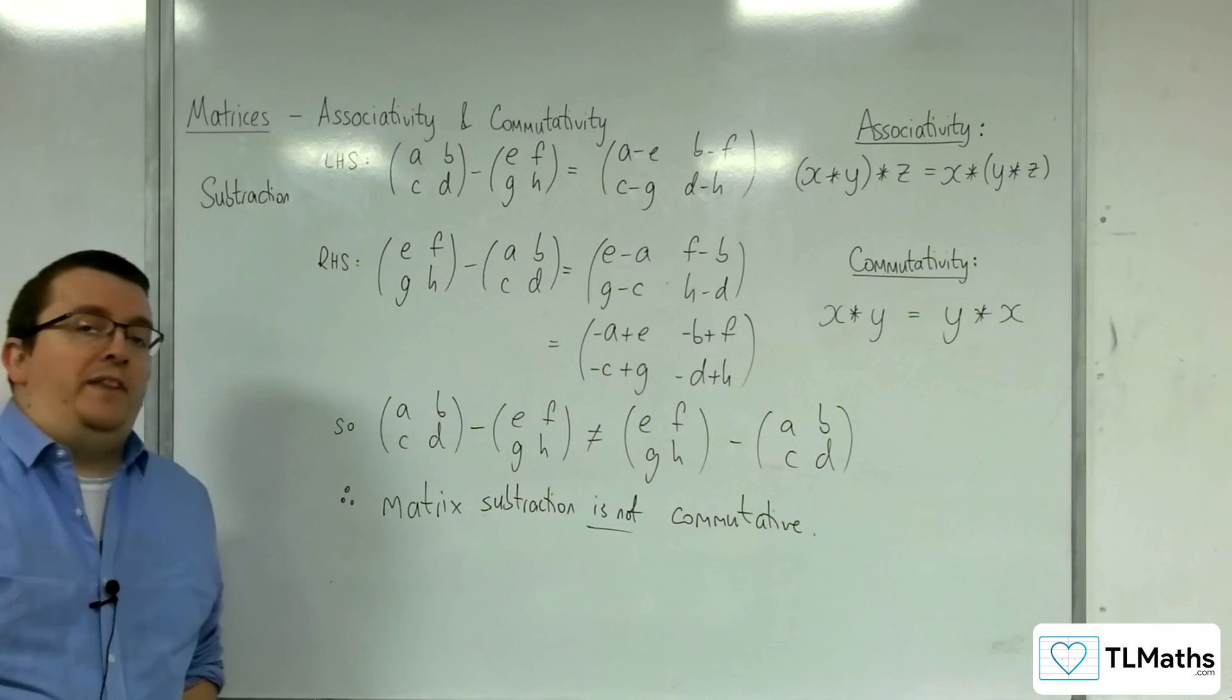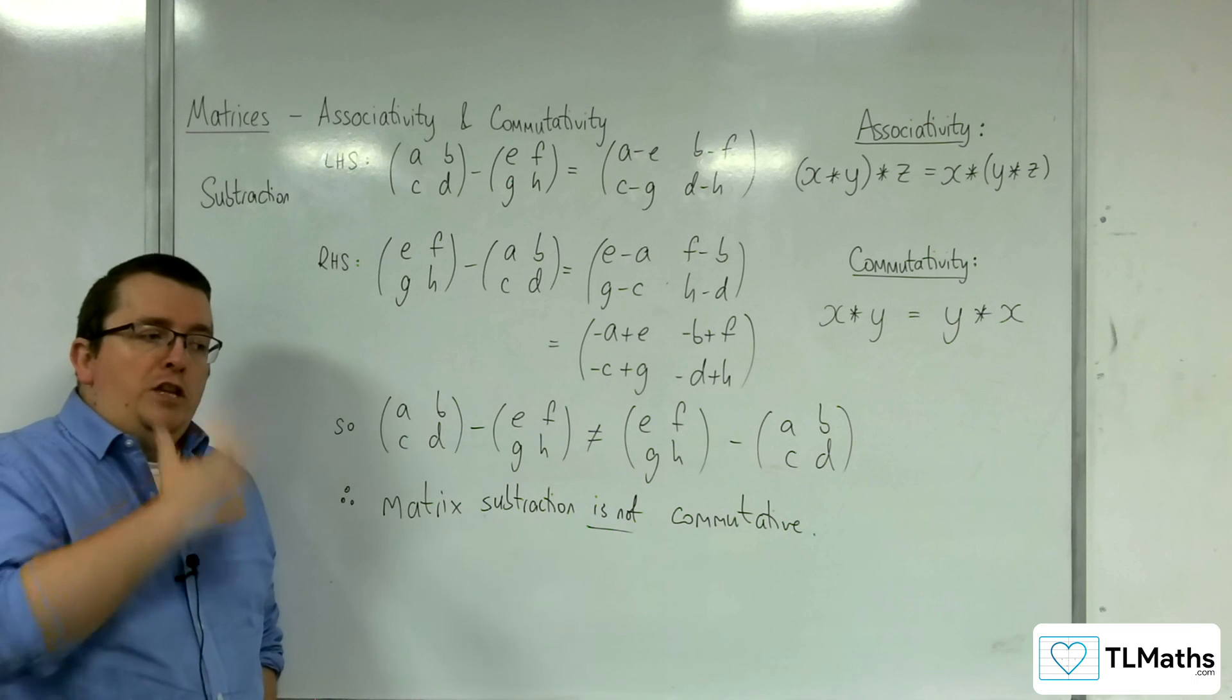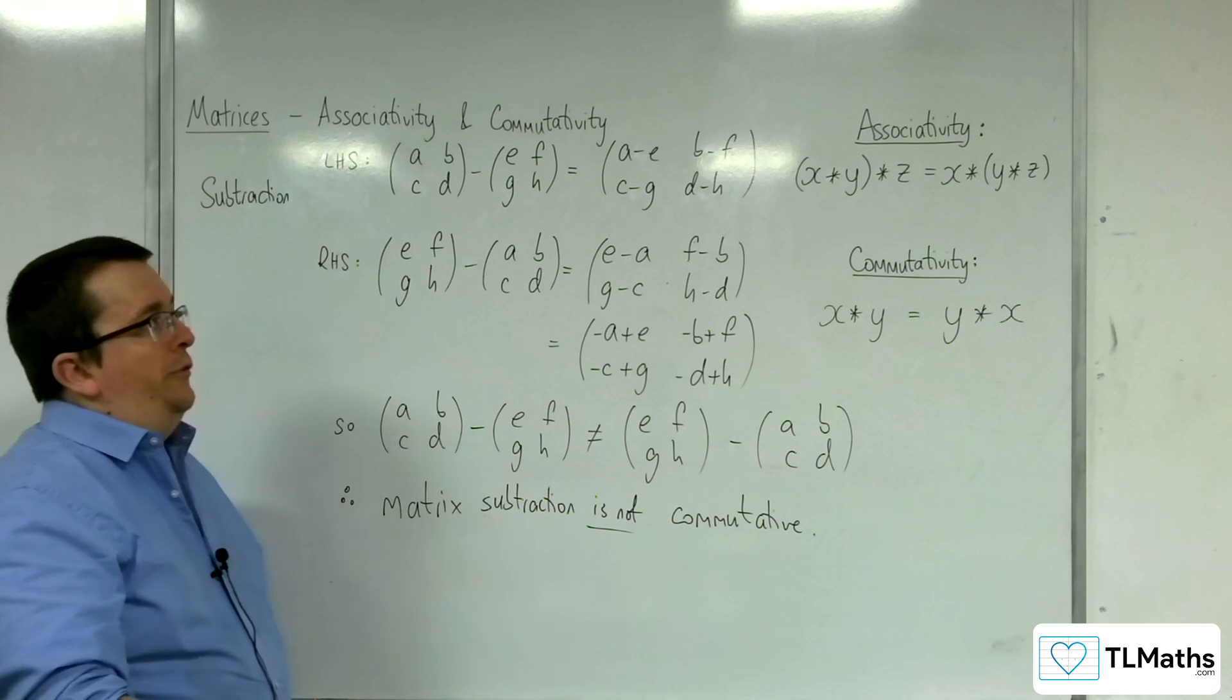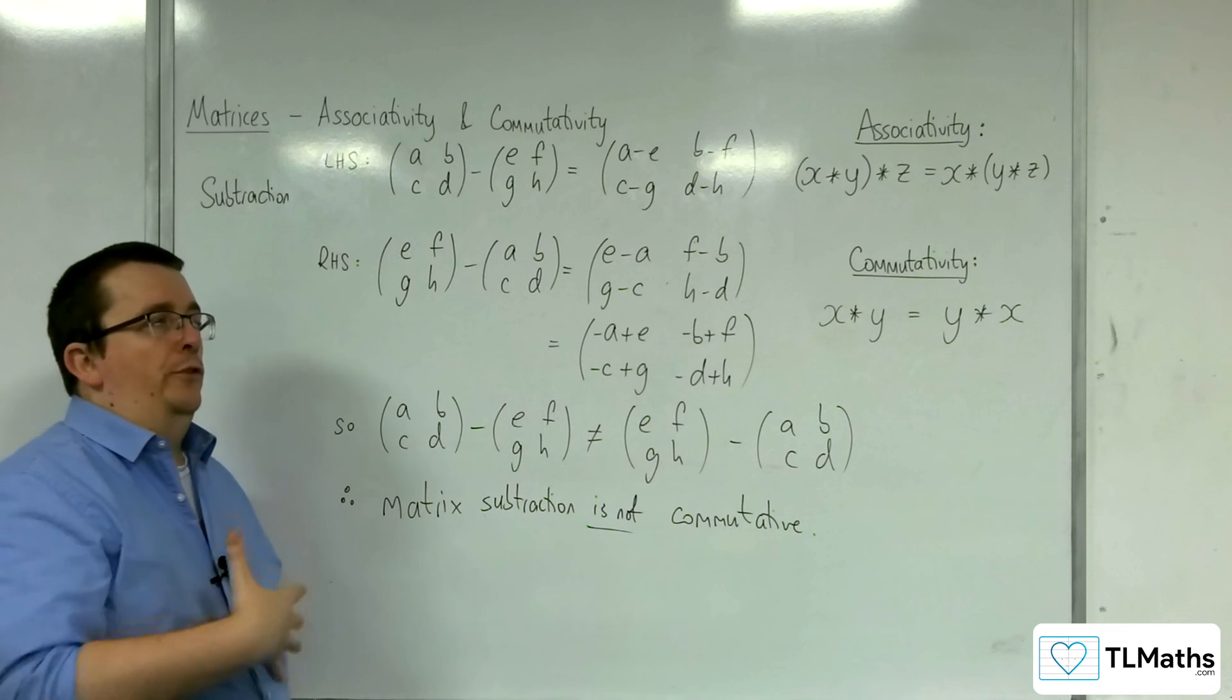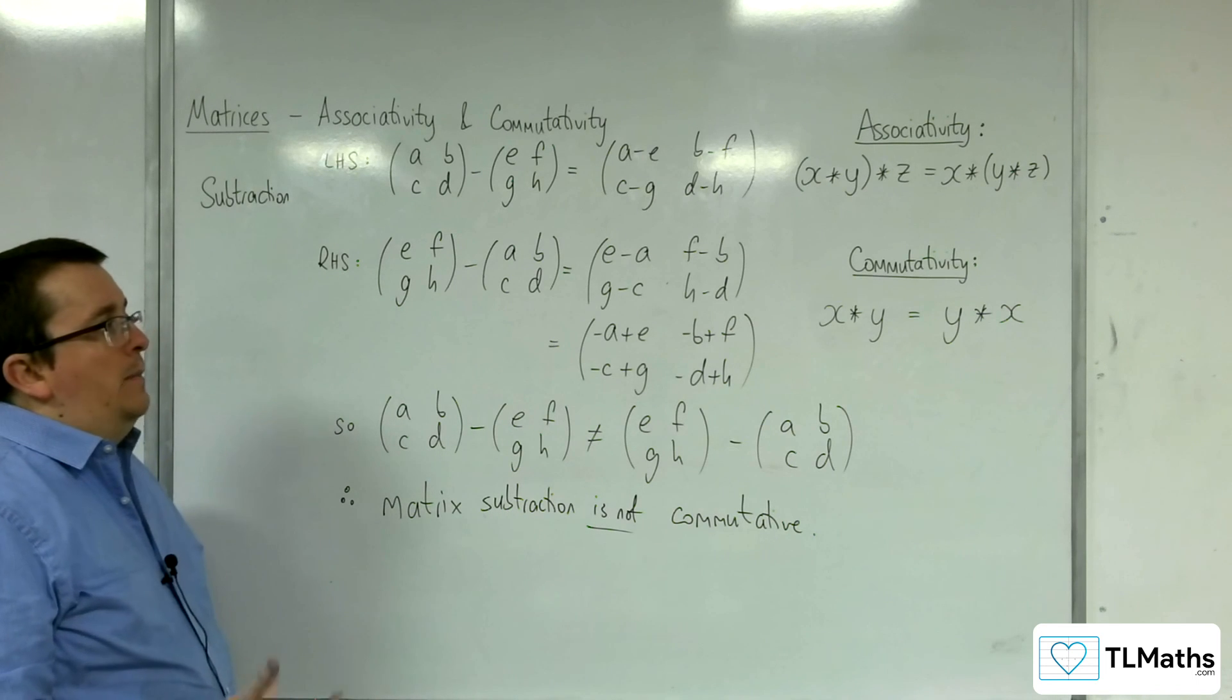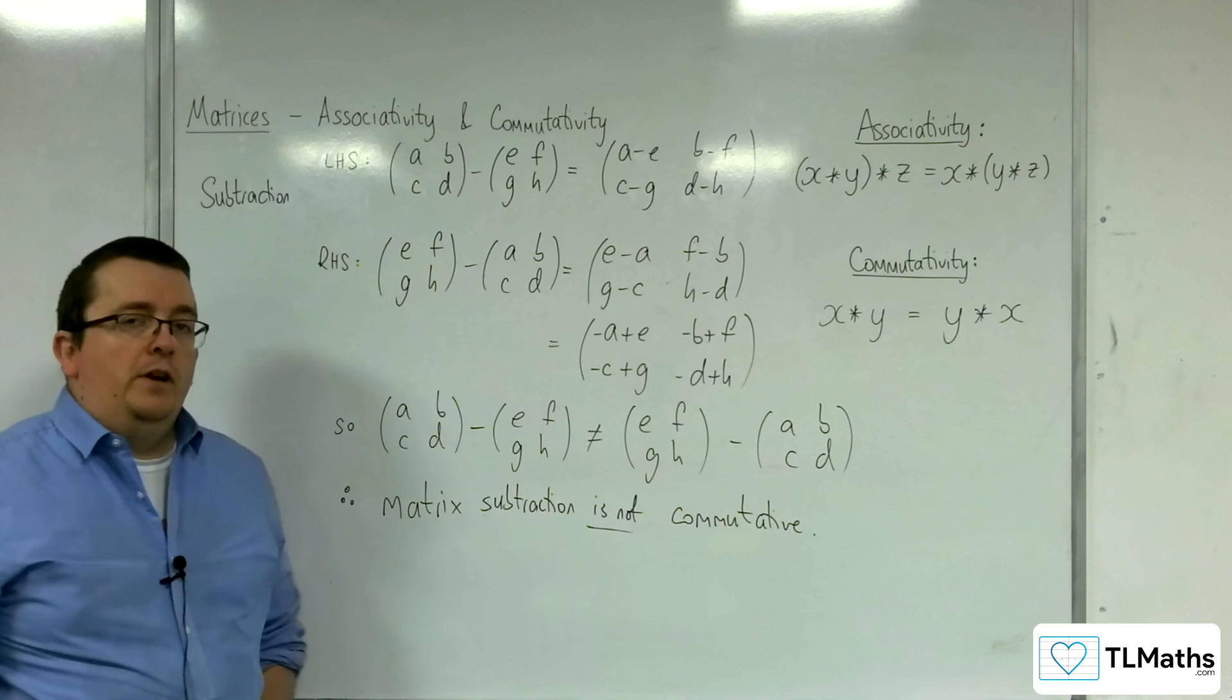So hopefully it makes sense now as to what associativity and commutativity are. They are things that you would take for granted. But we may well be asked to show that a set of matrices are commutative or associative. And as I said, it's not limited to just addition and subtraction. It could be multiplication. It could be some other operation that we're not aware of yet. So this extends beyond further maths as well.